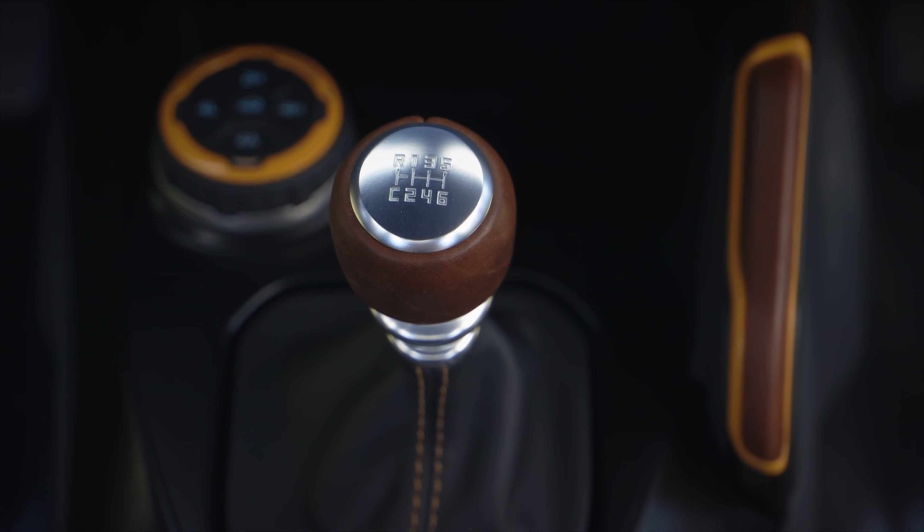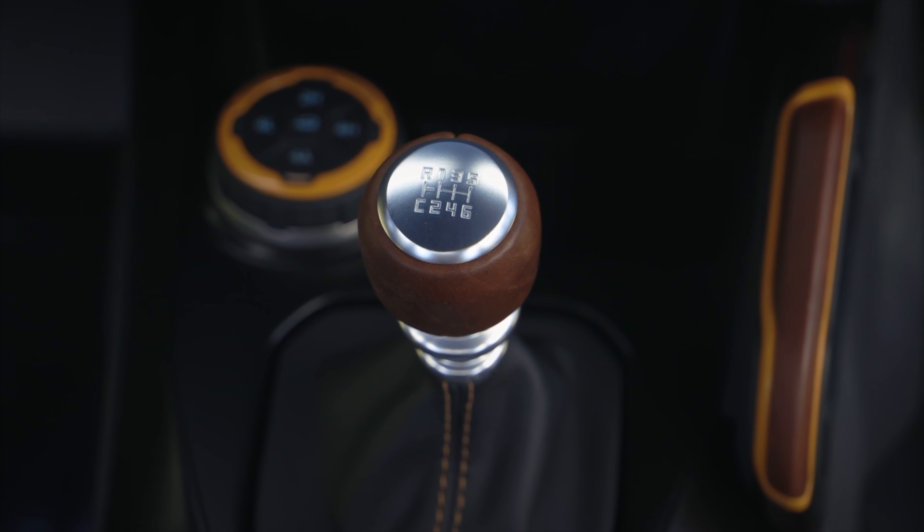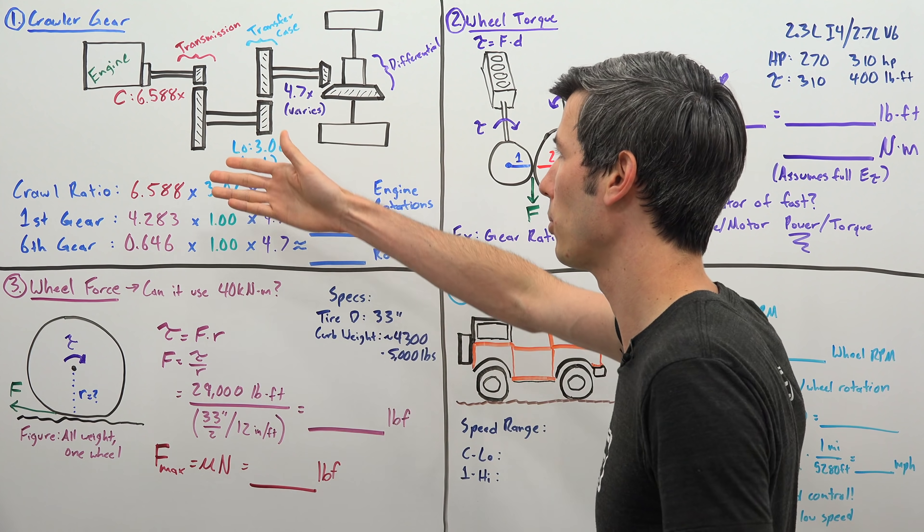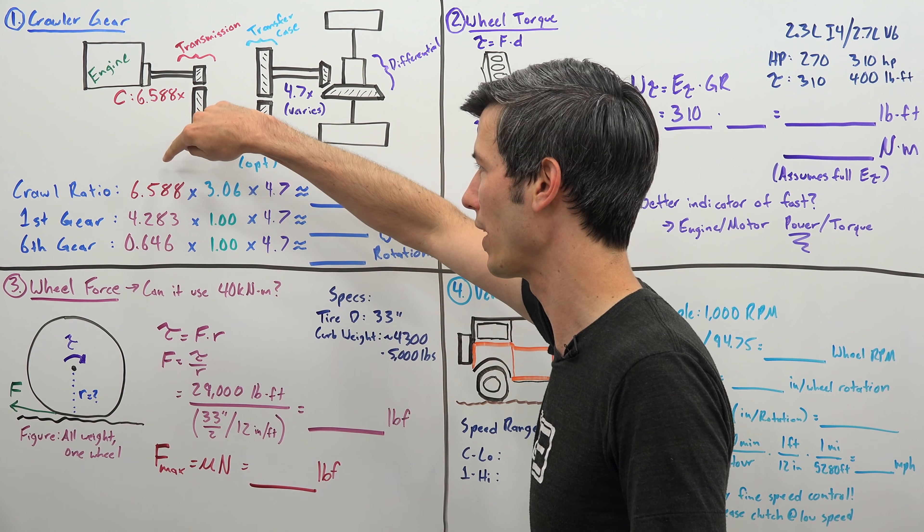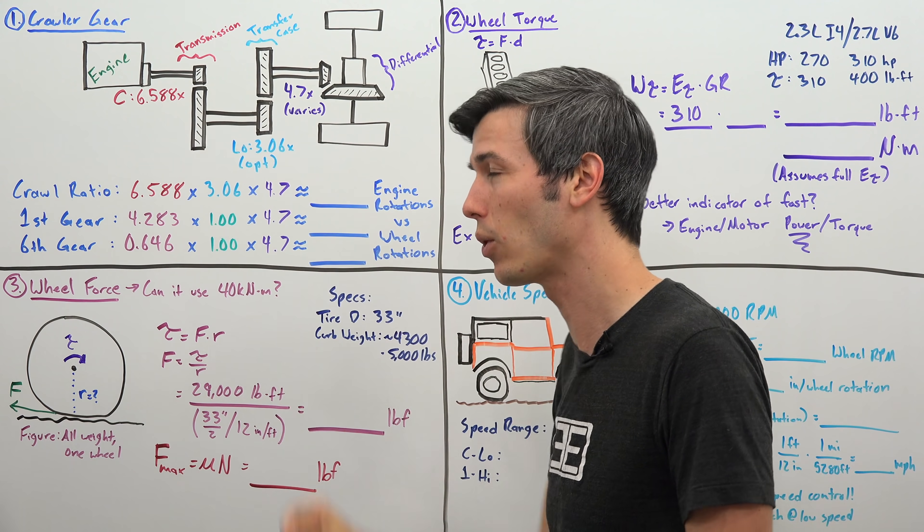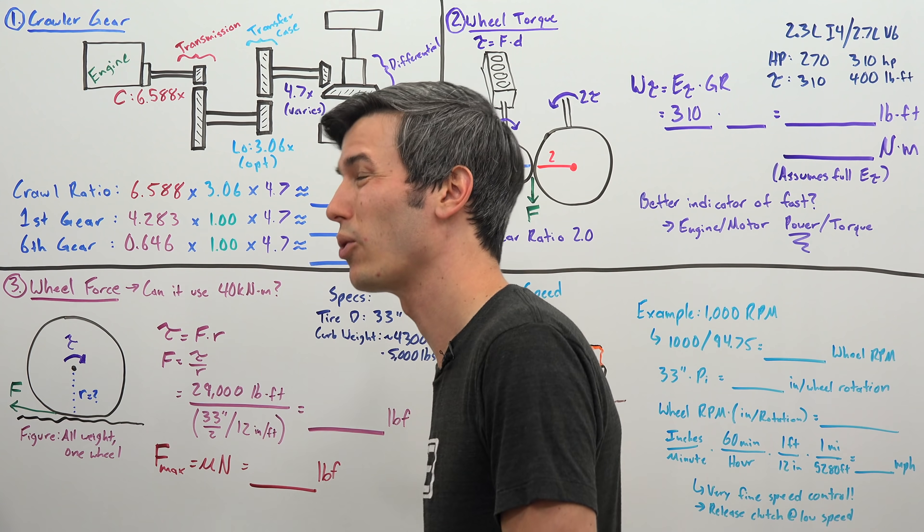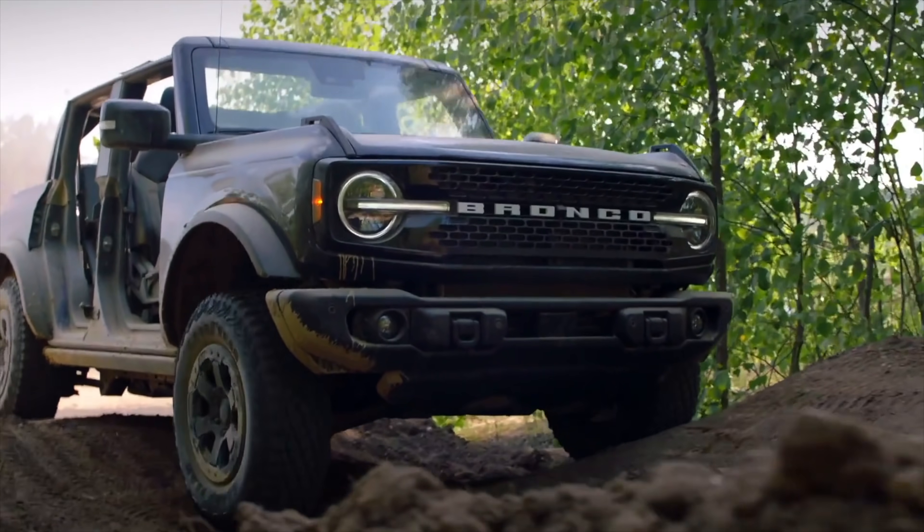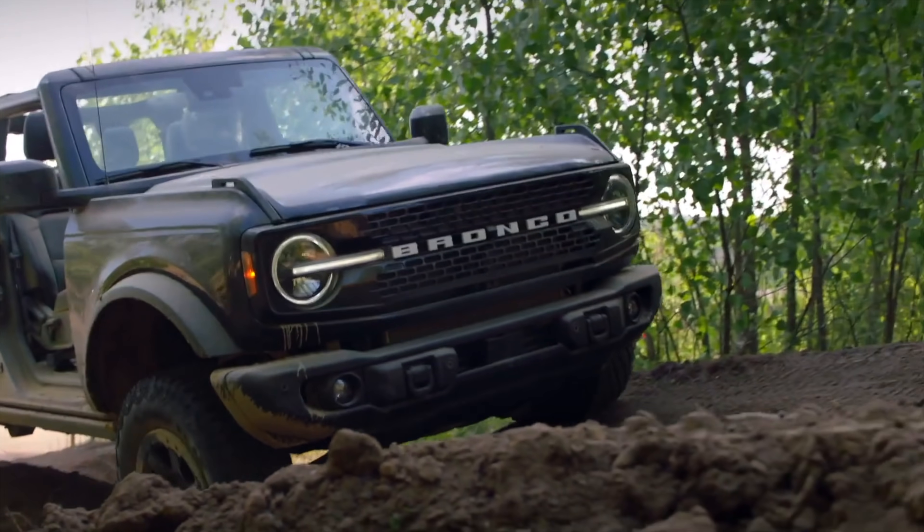So what is a crawler gear? Well, you can think of it like a first gear, except it has an even higher gear ratio. So for example with the Ford Bronco, the crawler gear's ratio is 6.588 to 1, whereas first gear's ratio is 4.283 to 1. This means when you're using that crawler gear, you have more wheel torque, but a lower top speed in that gear.